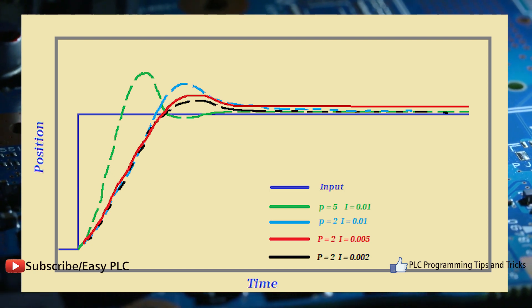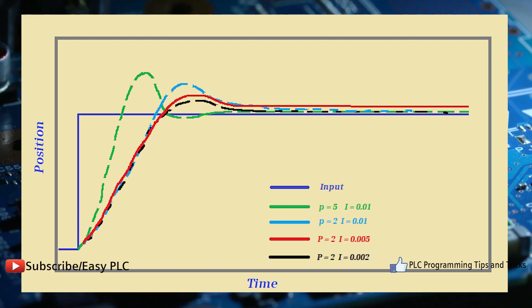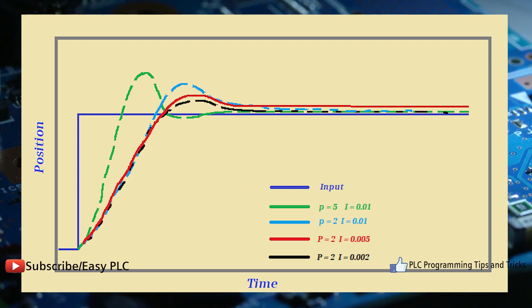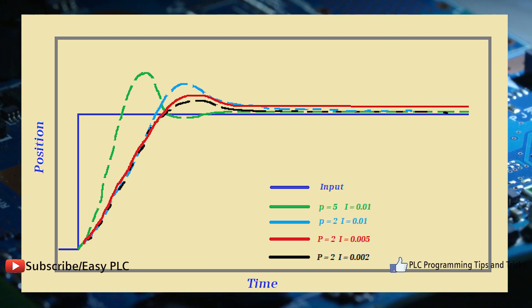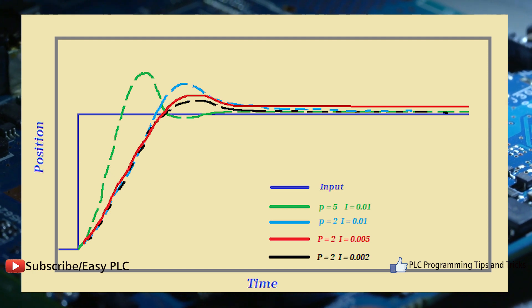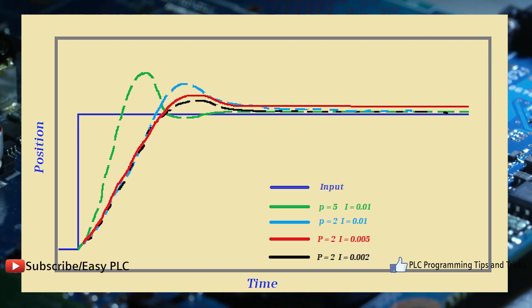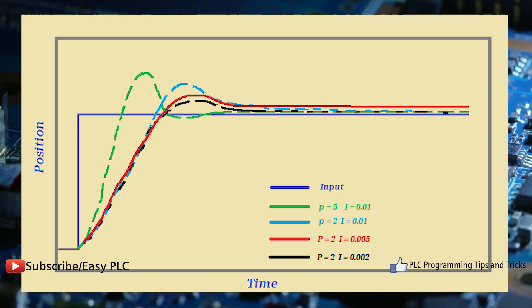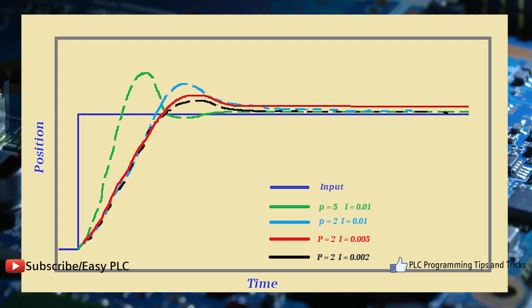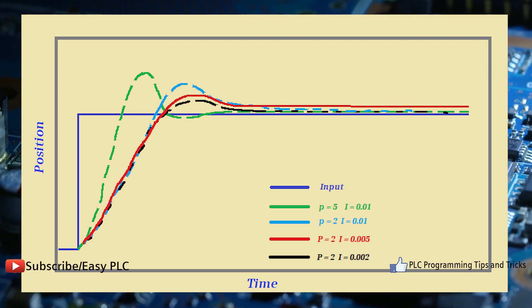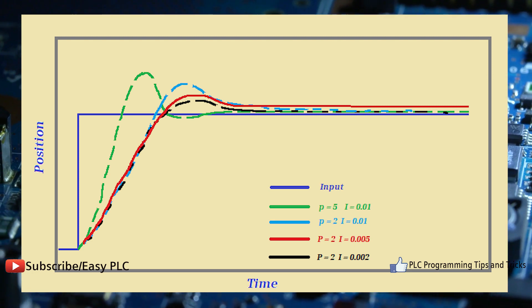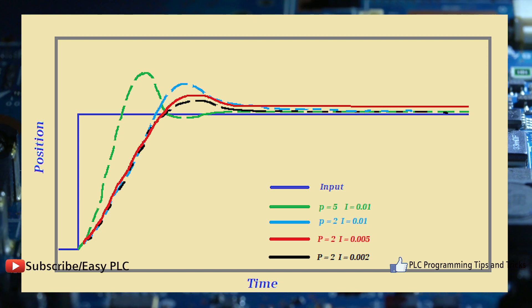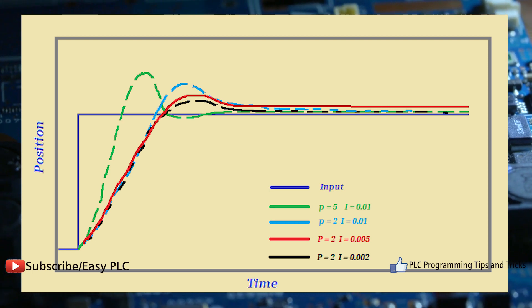For most of the cases, PI controller is used particularly where high speed response is not required. While using the PI controller, I controller output is limited to a certain range to overcome the integral wind-up conditions where integral output goes on increasing even at zero error state, due to nonlinearities in the plant.